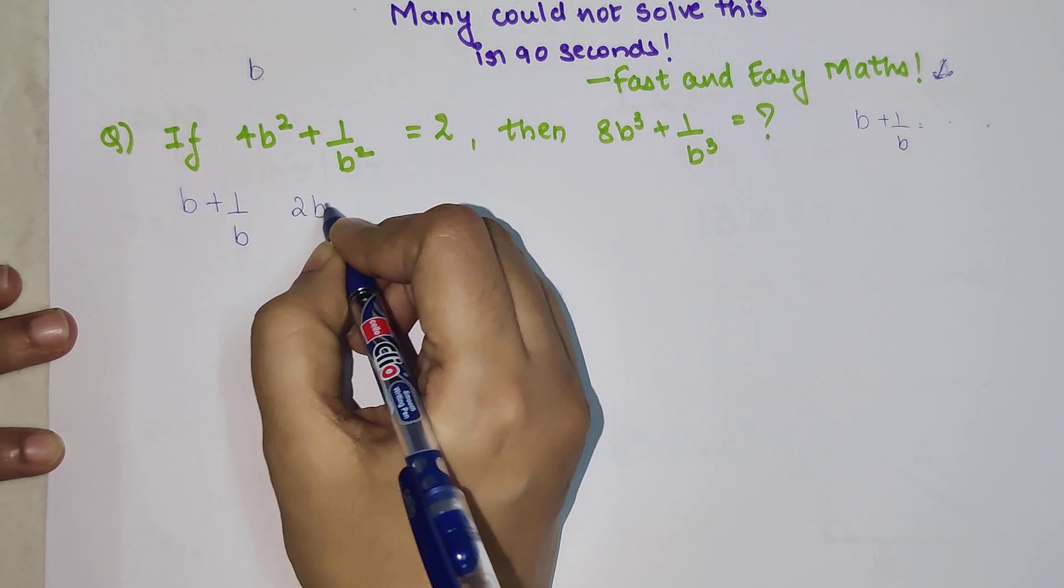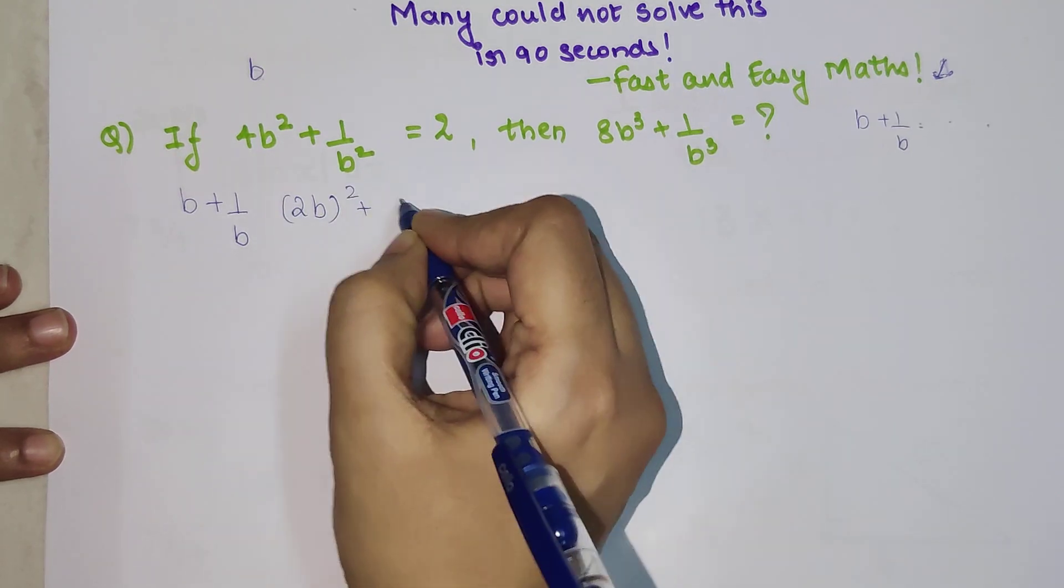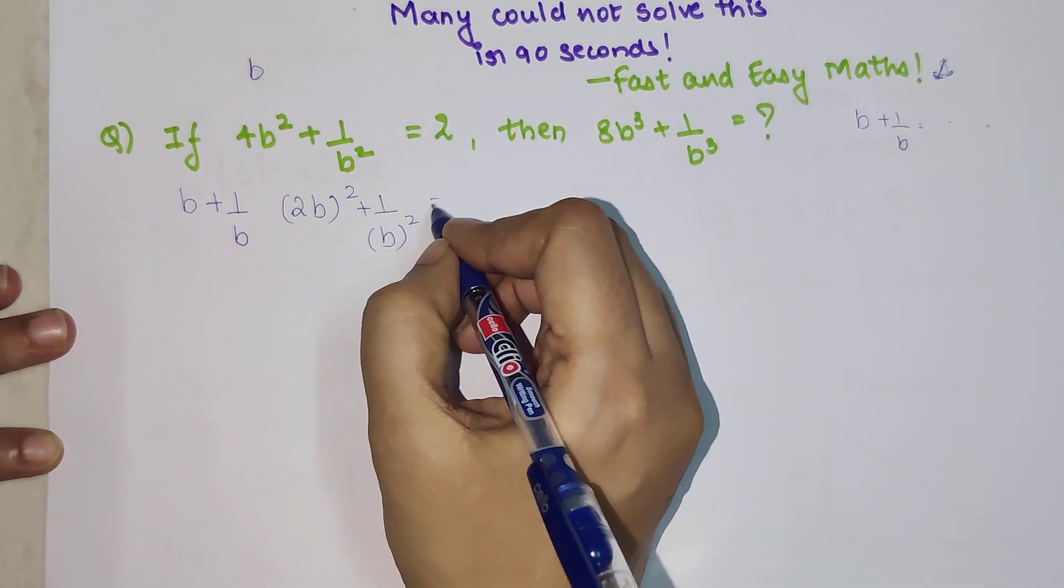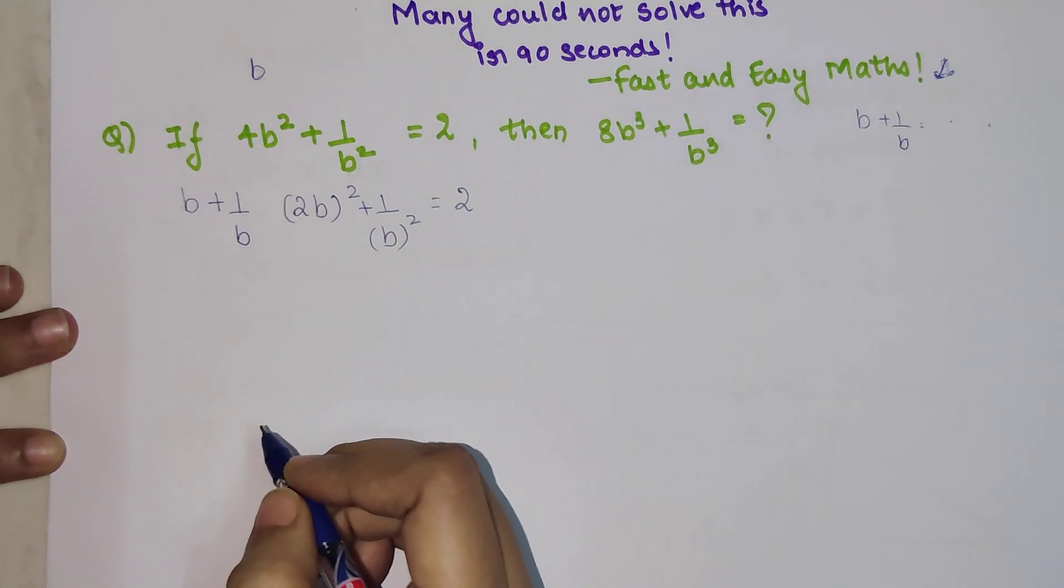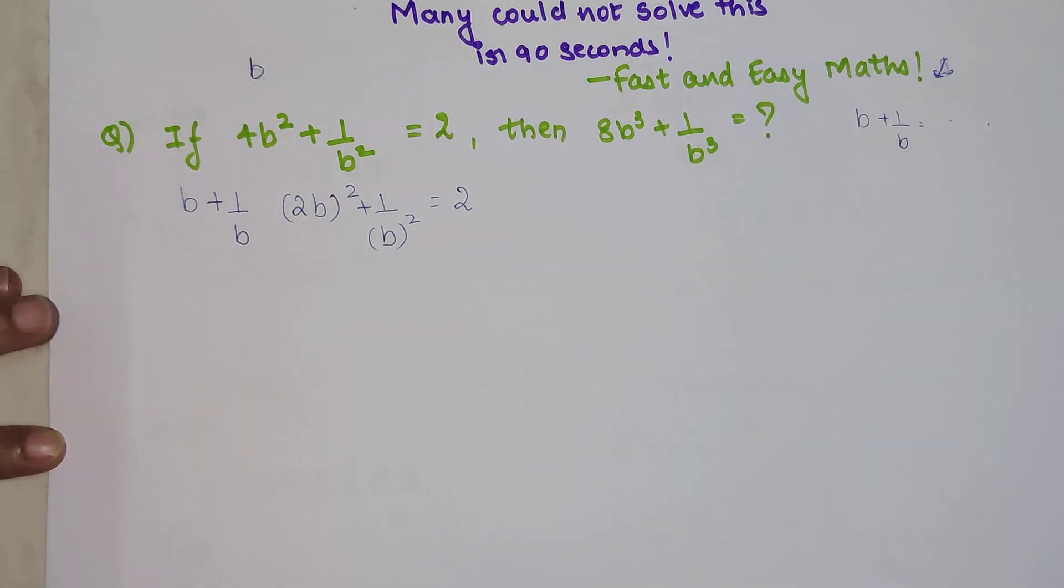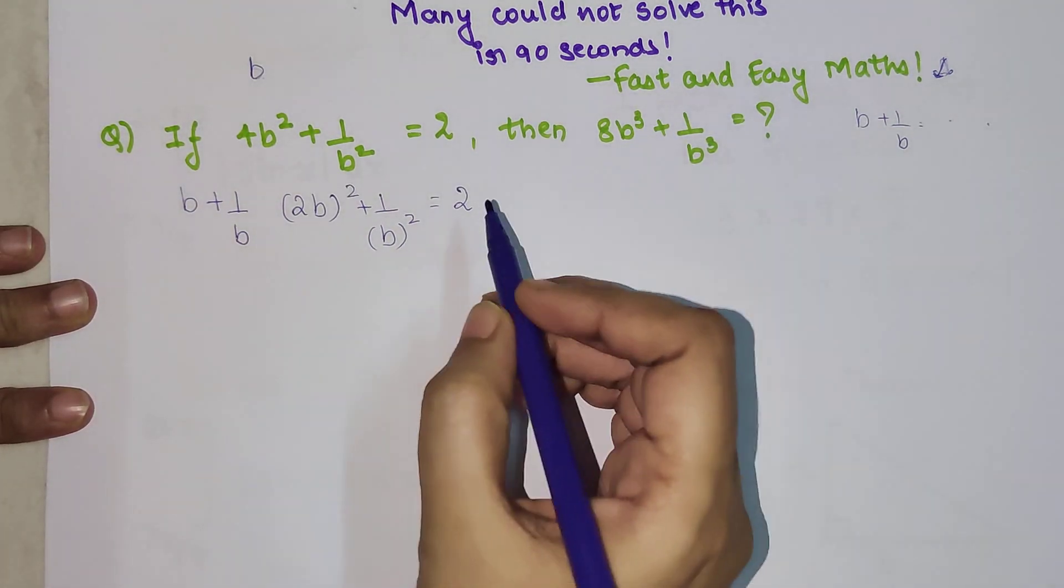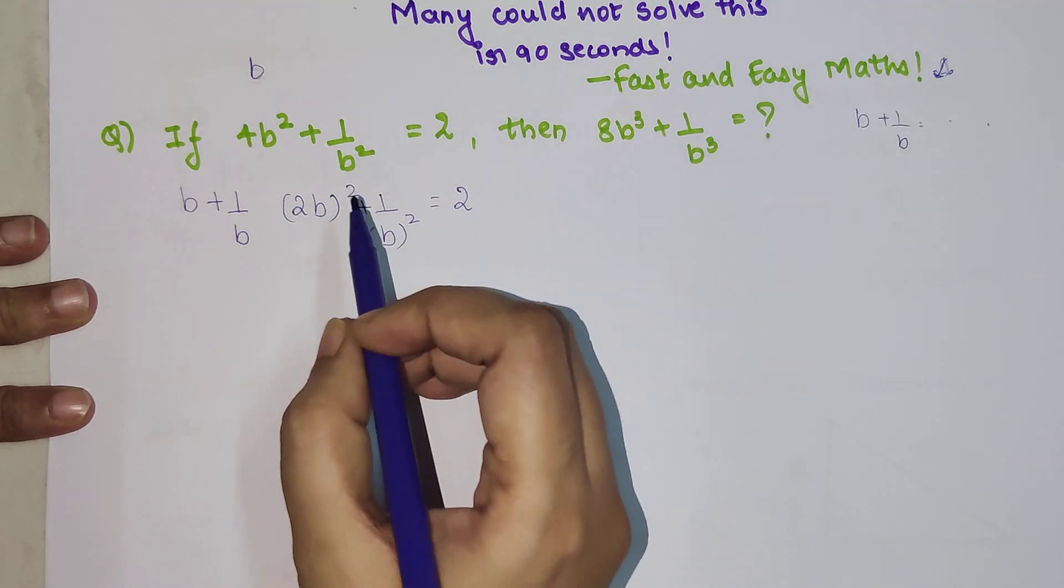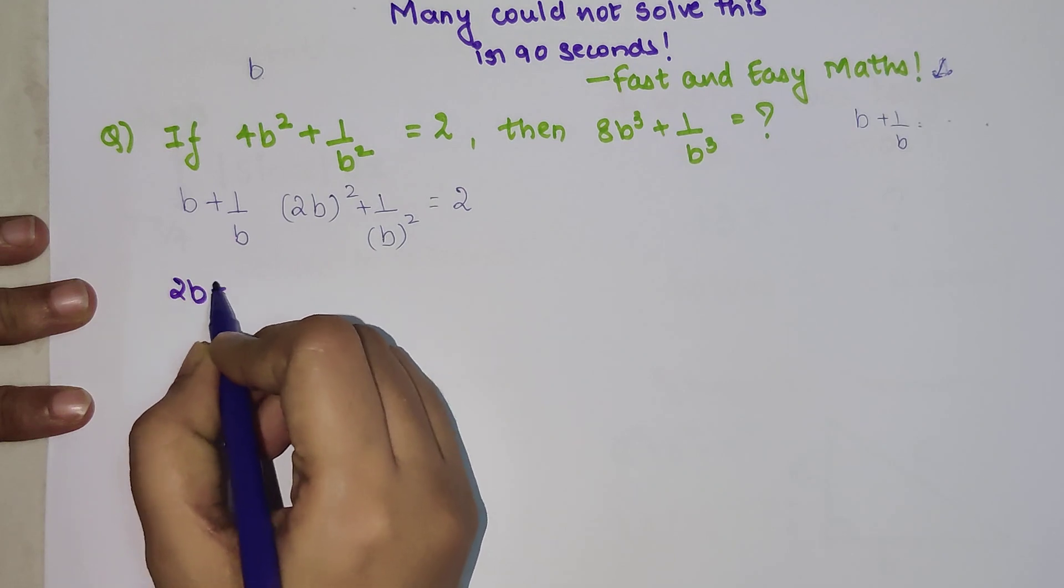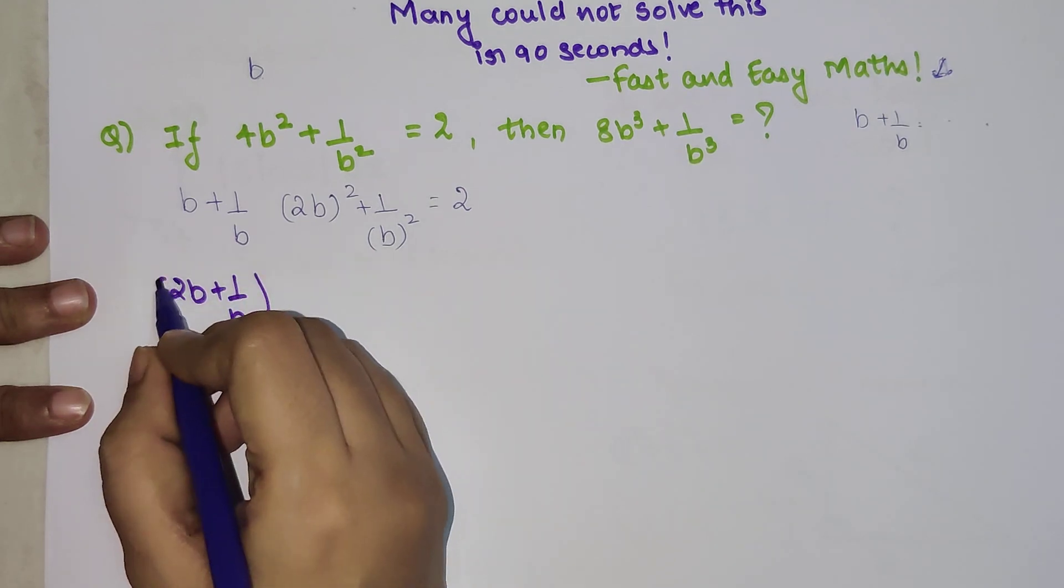Here can I write this as nothing but (2b)² + (1/b)² is equal to 2. Now if I want anything in terms of 2b + 1/b the whole square, I need to do something in those terms so that then I can take a square root.